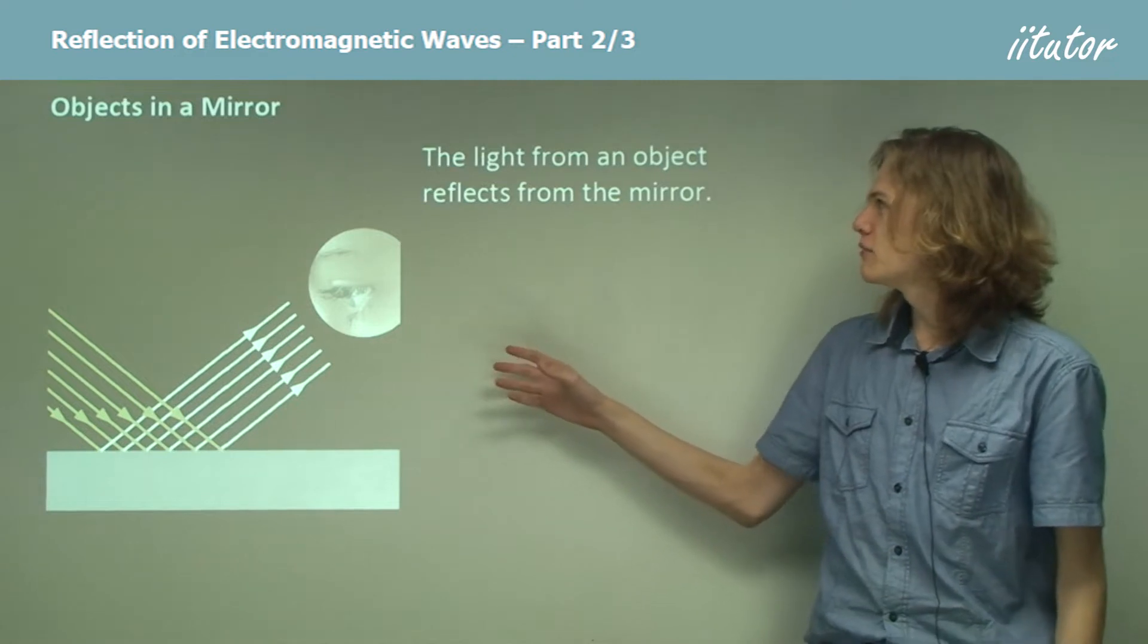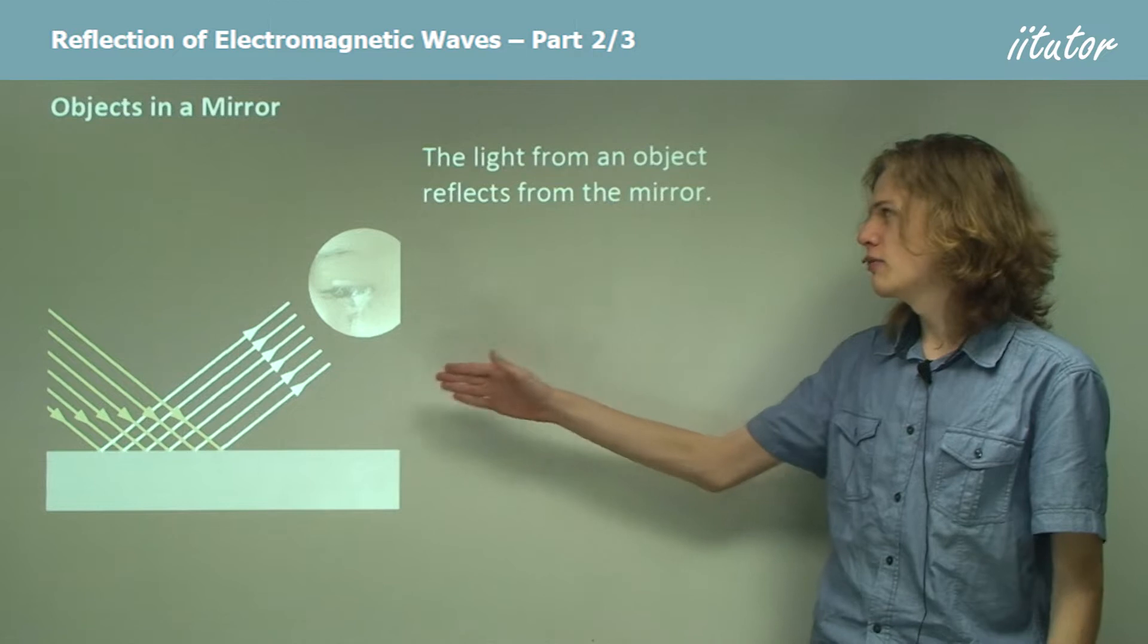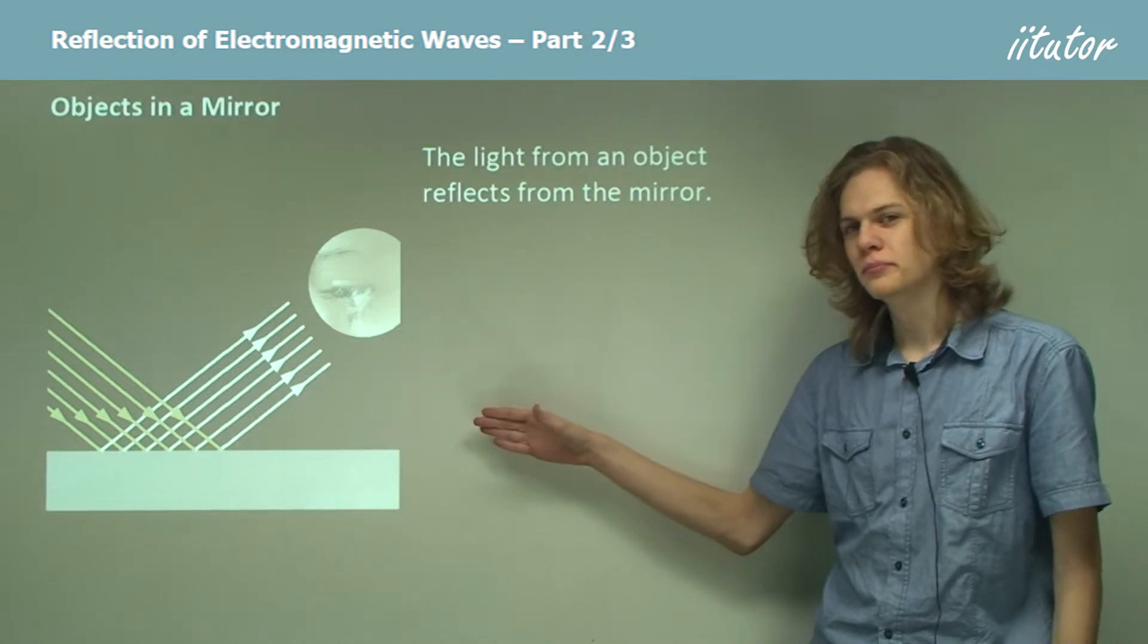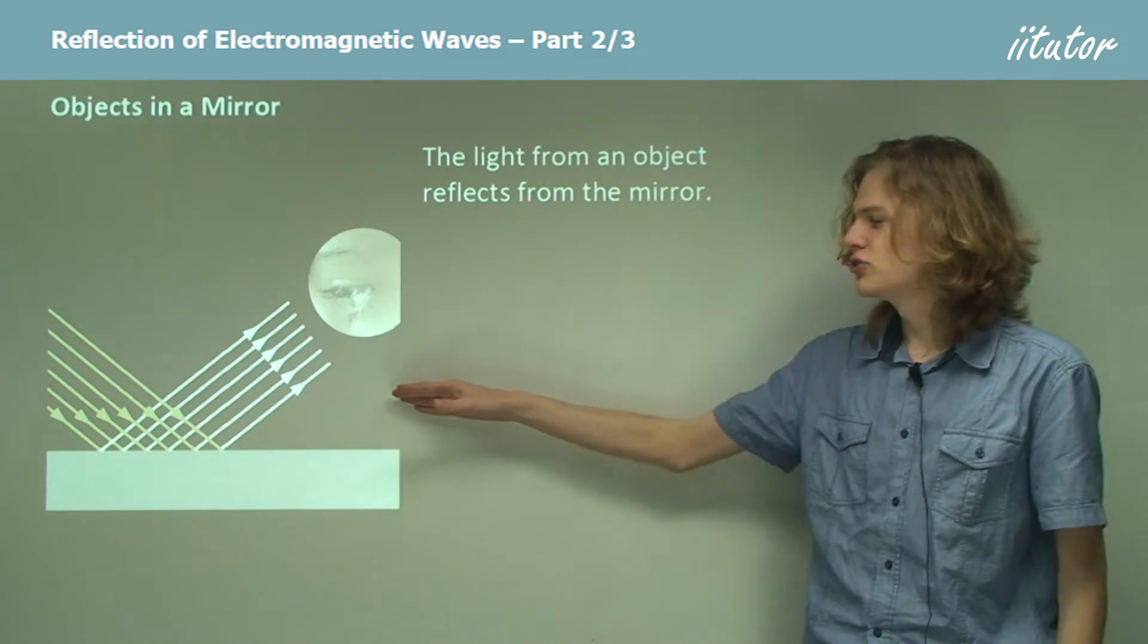Let's take a look at this diagram. Here we have the light from an object, the incident rays coming in from the left, striking a mirror, and being reflected and becoming reflected rays on the right side of the picture.